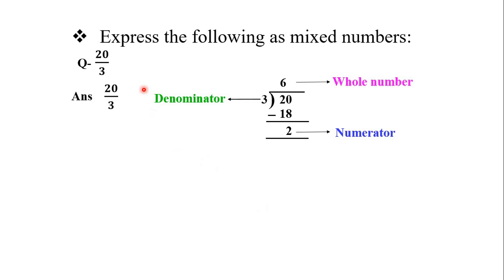Express the following mixed numbers. Hame ek fraction diya gaya hai. Ab hame is fraction ko ek mixed number me convert karna hai. So let's start. Hame sabse pahla twenty jo divide karna hai three se. Hame woh division karna hoga. To three sixes are eighteen, minus karne par two remaining. Ab ye six kya hai? Ye six hamara whole number kehlata hai. What is this two? Ye hamara numerator hoga. Aur three denominator hoga.